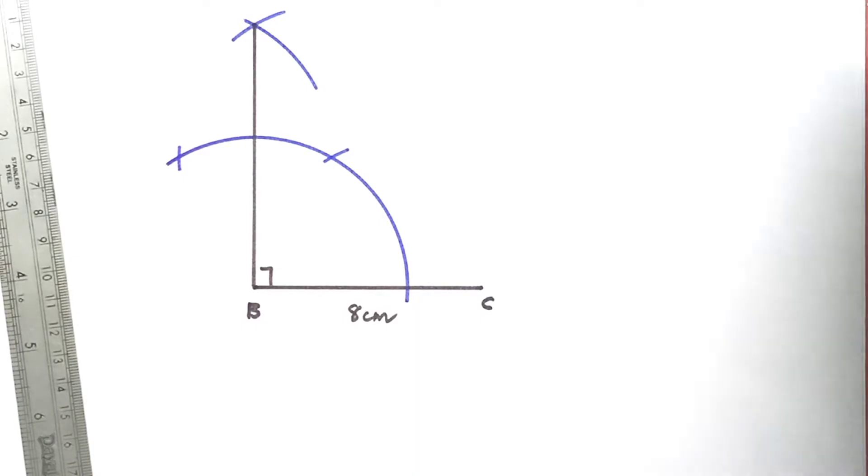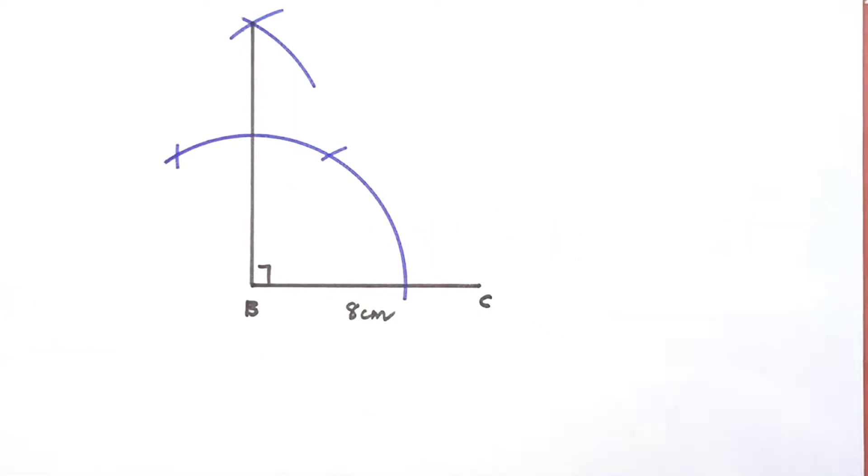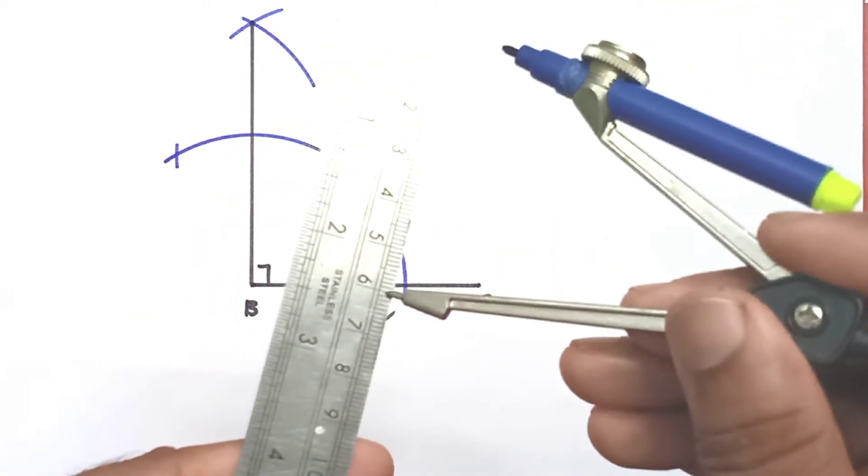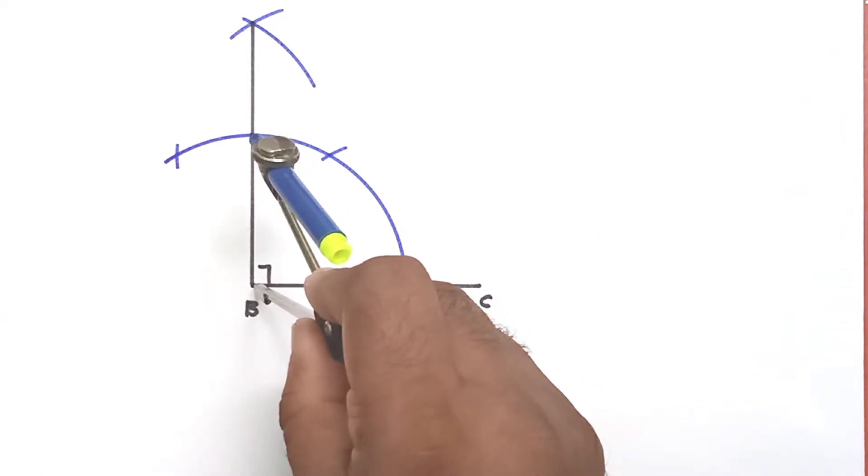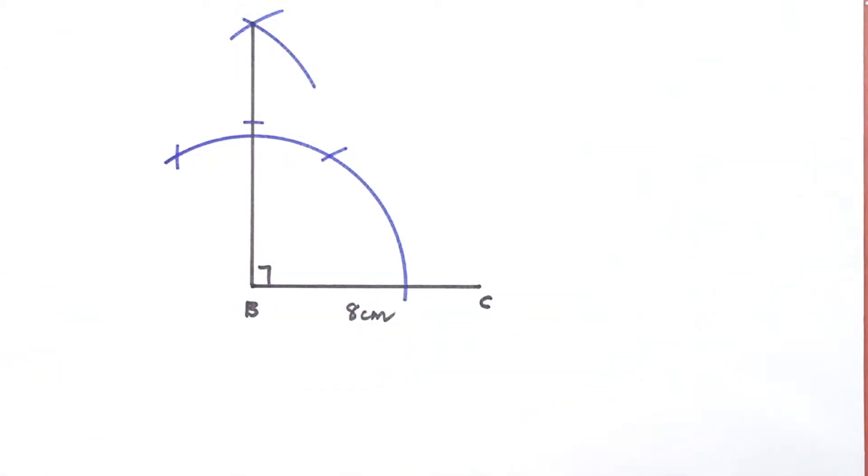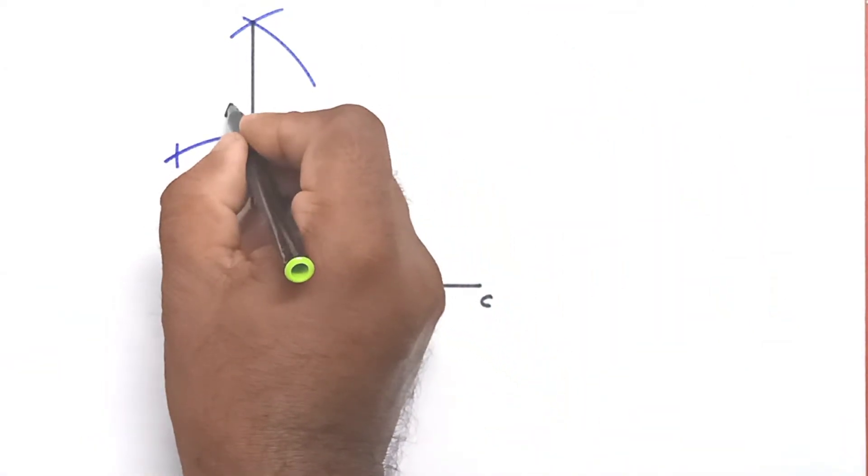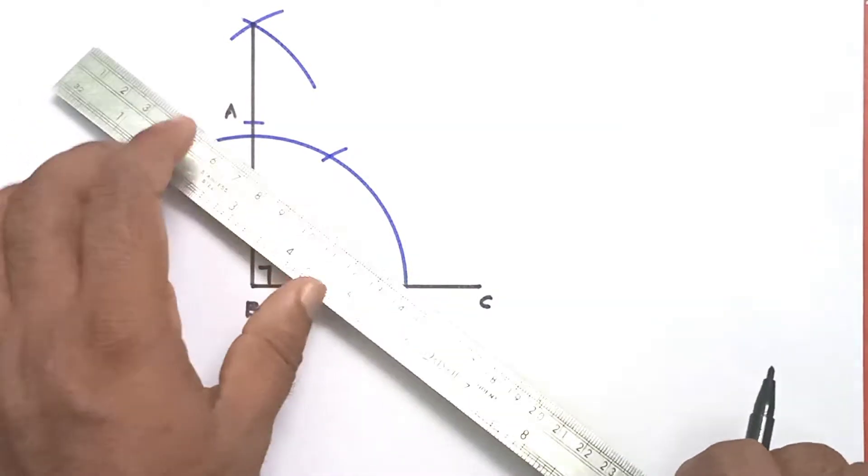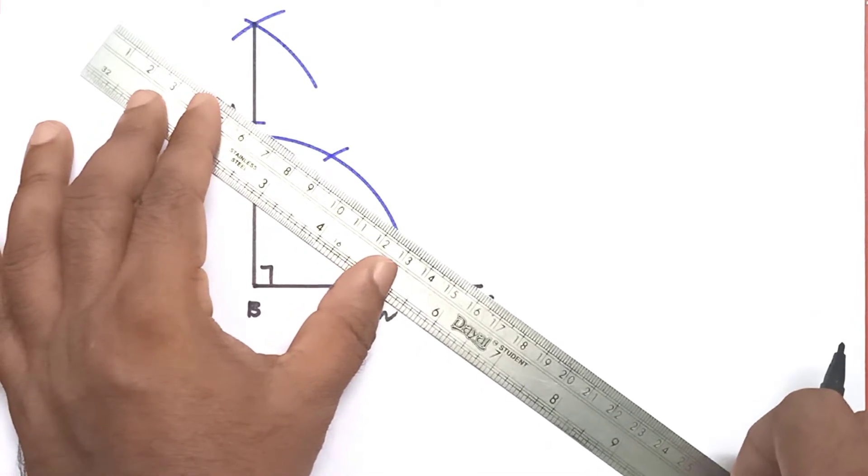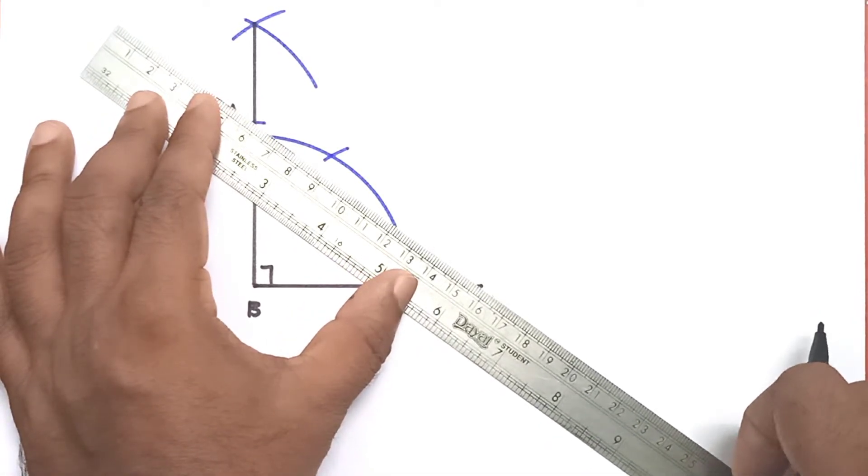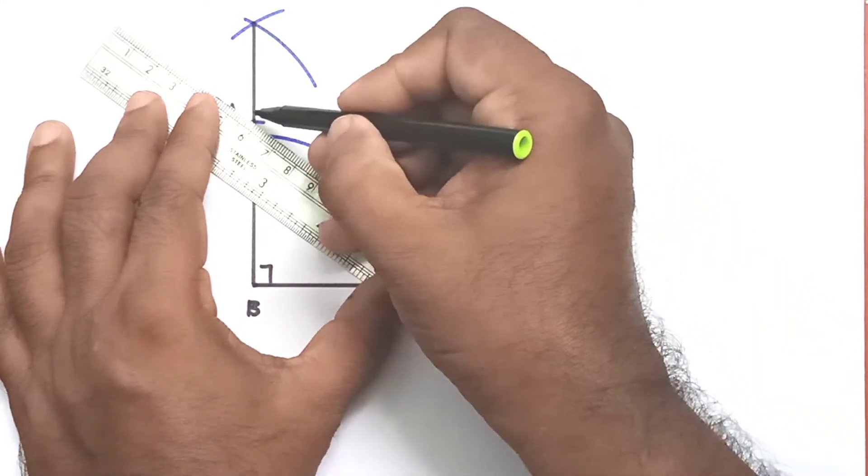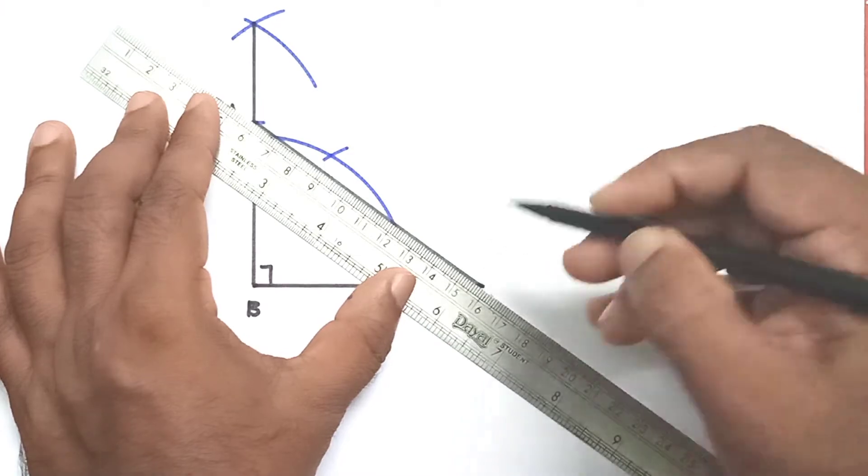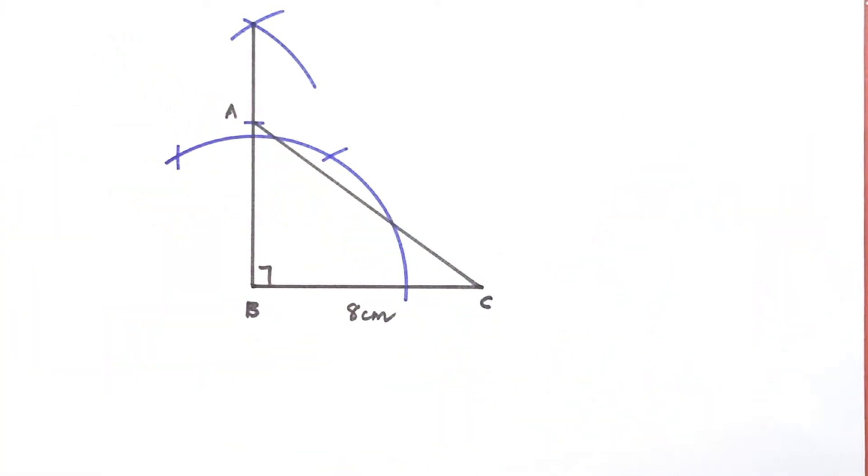Now AB is 6 cm, so take 6 cm on compass and cut. So this will be A. Join AC. So ABC is the required triangle.